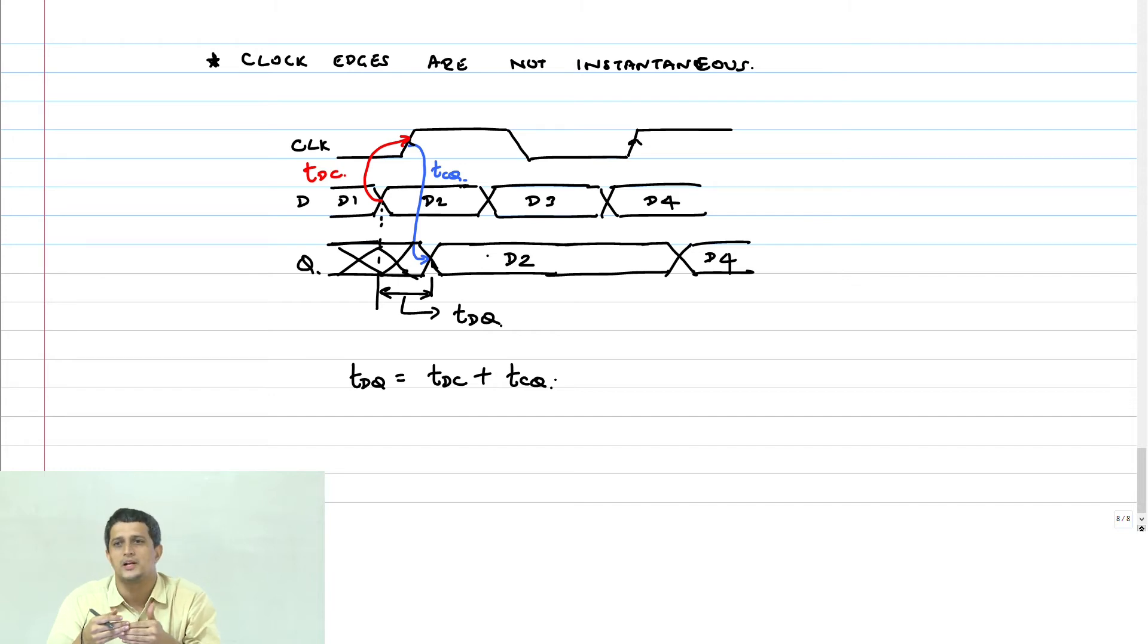The thing is, the flop failing is actually more an extreme condition. The point is, as I bring the data edge closer and closer to the clock, that feedback loop will start entering metastability region.